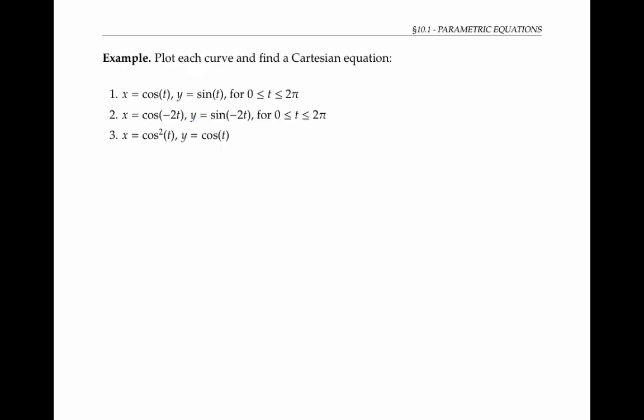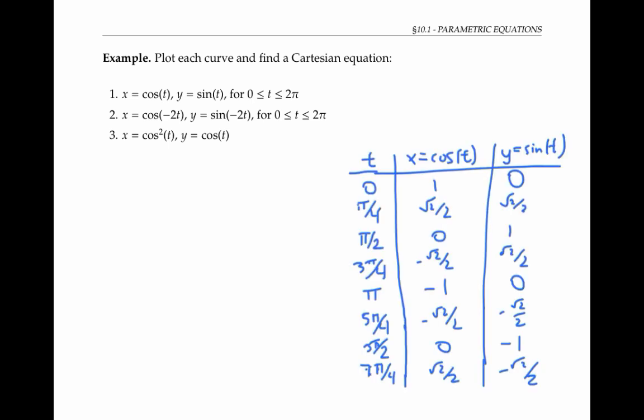Let's try some more examples. A table of values for the first example helps us draw the familiar graph of a circle of radius one. This should come as no surprise, since the equations x equals cosine t and y equals sine t are familiar from trig as a way of describing the x and y coordinates of a point on the unit circle.